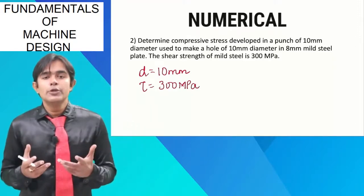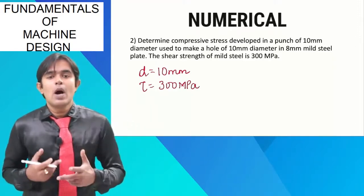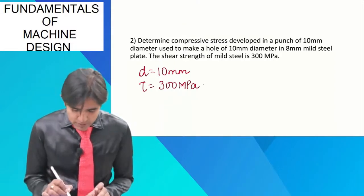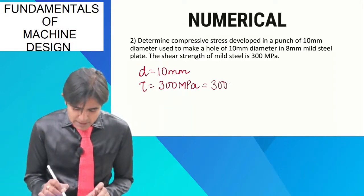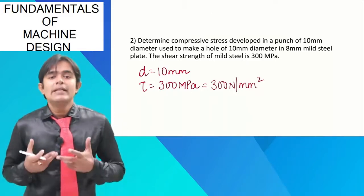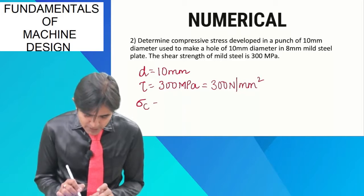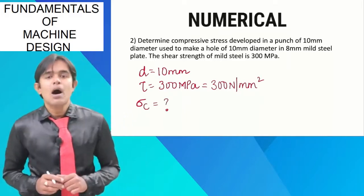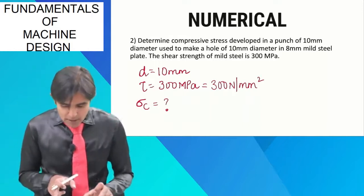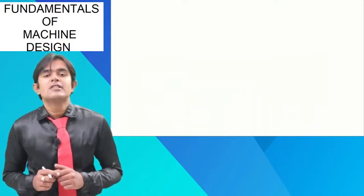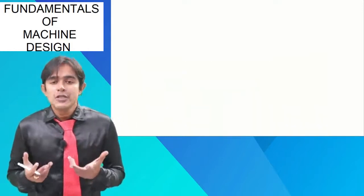I already told you, 1 mega Pascal is 1 newton per mm square, so the conversion would be 300 newton per mm square. What I need to do is find out the compressive stress, which is denoted by sigma C. Let us start. What I am going to do is first I will find out the value of shear stress.